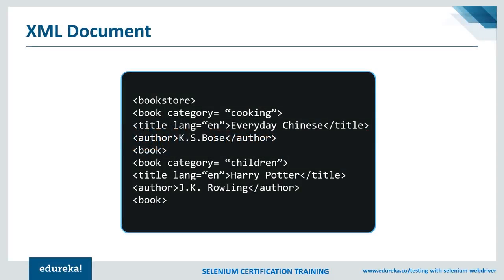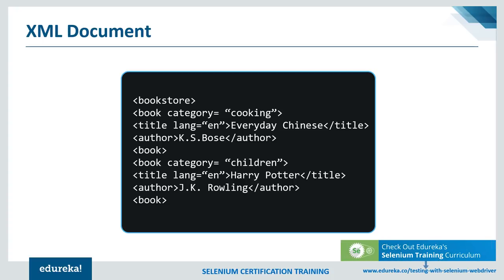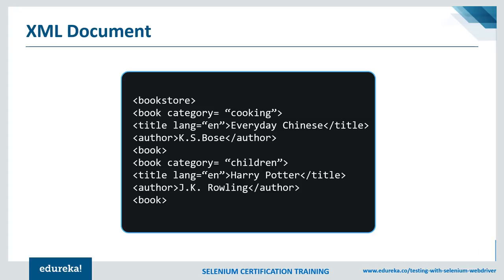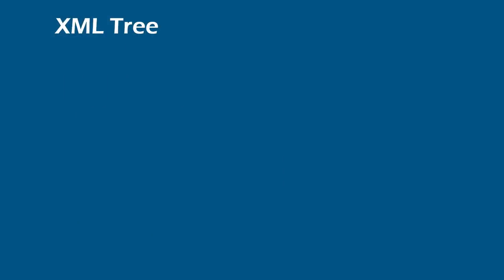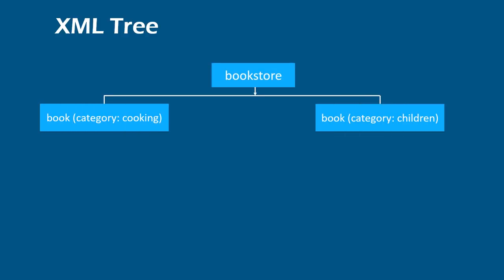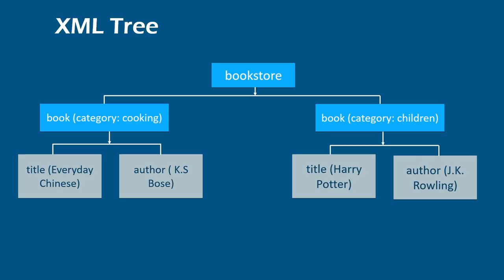This is an example of an XML document where you have different tags and attributes. The bookstore node has a child node called book, followed by an attribute called category whose value is cooking. This book node in turn has two child nodes — title and author. Let's visualize this document in a tree-like structure: bookstore is the root node, it has two children, both are book nodes. Category for the first is cooking and for the second is children, and below that both have two tags — title and author.